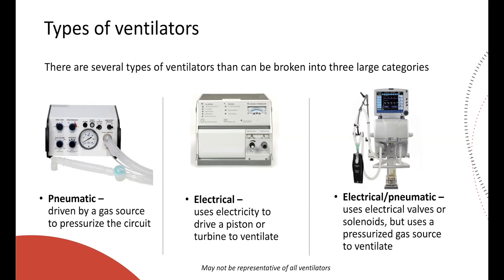The second type is electrical, meaning it uses electricity to drive a piston, turbine, or blower to ventilate. For example, the LP-10 has a piston that pushes forward to give inspiration, with exhalation done through a valve. The type you'll most likely see in intensive care combines electrical and pneumatic — the best of both worlds. It uses electricity to control valves and solenoids, while also using a pressurized gas source to ventilate, allowing for faster response time and fancy monitoring with flow sensors.